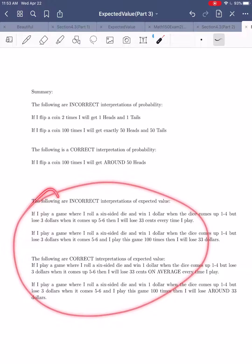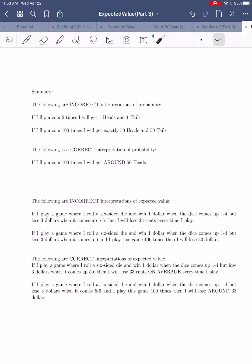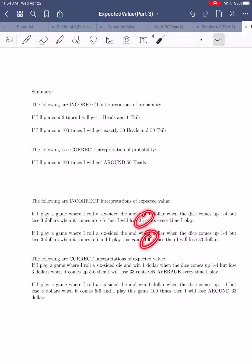Let's do the same with expected value. Incorrect interpretation: if you play that game rolling a six-sided die, winning $1 on one through four but losing $3 on five or six, you will lose 33 cents every time you play. That's obviously incorrect — every time you play, you either win a dollar or lose $3. You are never going to lose exactly 33 cents. Similarly incorrect: if you play this game a hundred times, 33 cents times a hundred is $33, so you will lose exactly $33. That's still incorrect — the game doesn't keep track and ensure you lose exactly $33.